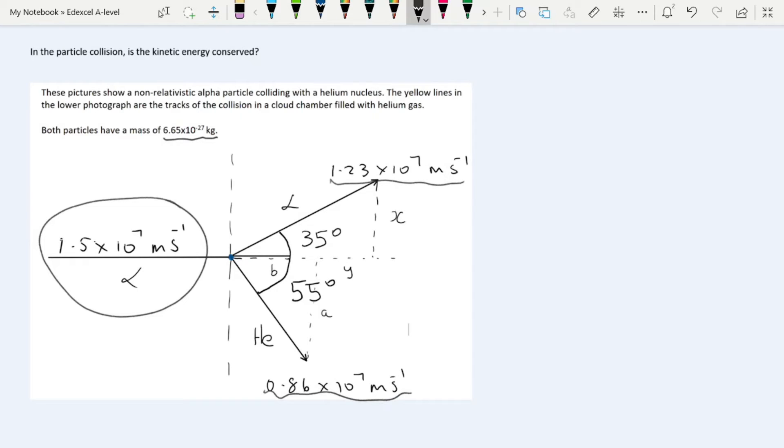Now what you can do is use half mv squared to calculate the kinetic energy of the alpha before, the kinetic energy of the alpha after, and the kinetic energy of the helium nucleus after, and see if they're the same. I'm going to do the calculation, but you can pause the video, do the calculation yourself, I'll speed up my calculations, and then check your answer afterwards.